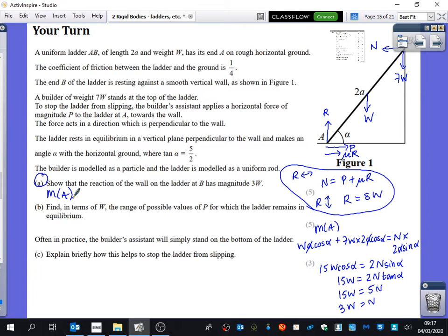This is where things then get a little bit interesting, because it says, find in terms of W the range of possible values of P for which the ladder remains in equilibrium.